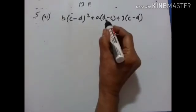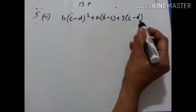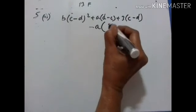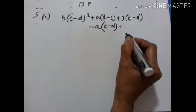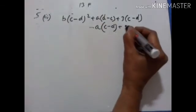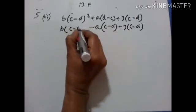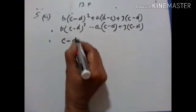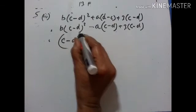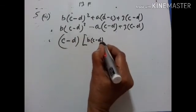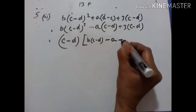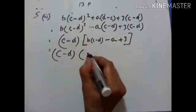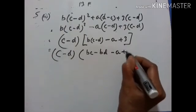Here it is C minus D, but in the other term it is D minus C. In order to make it C minus D, we change all the signs — minus A becomes plus A, minus C becomes plus C, plus D becomes minus D — so that the value remains the same. So 3 into C minus D, and B into C minus D squared. Now C minus D is common: what remains is B into C minus D — one C minus D has gone out — minus A plus 3. So the result is C minus D into BC minus BD minus A plus 3.